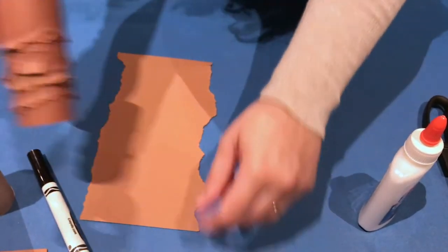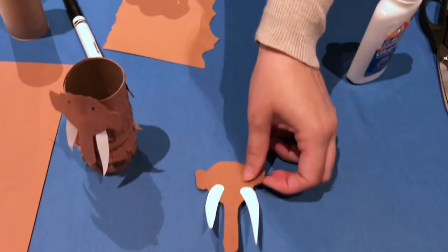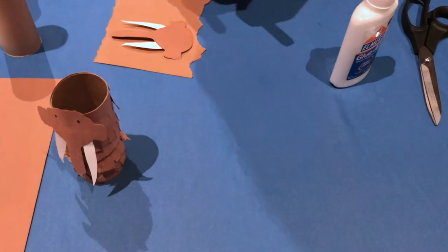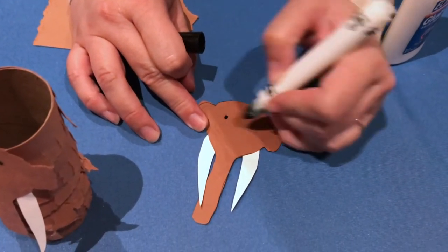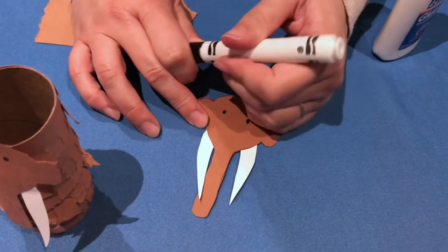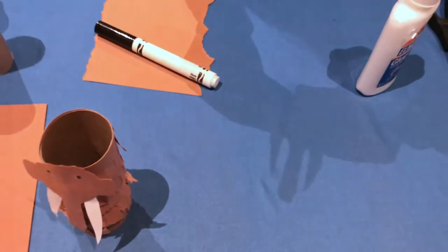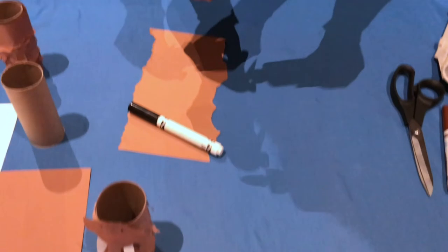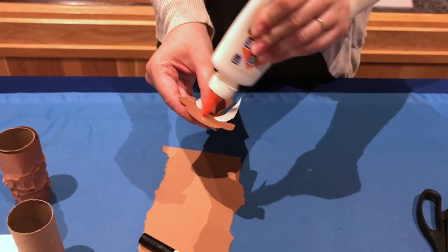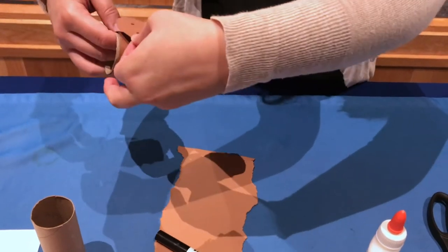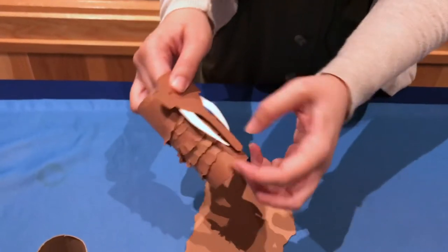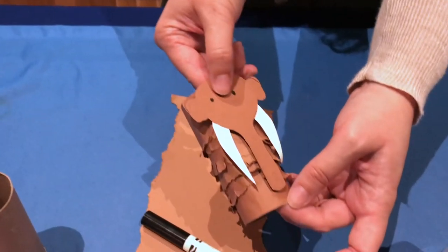And by now hopefully the tusks are nice and dry. I'm just going to take my marker here and draw two little eyes on. And then glue it to the body. If you want you could make a little tail for the back side as well. There is our mastodon.